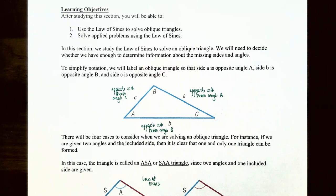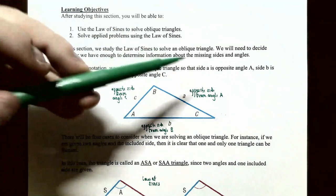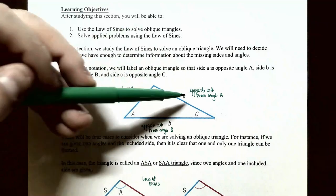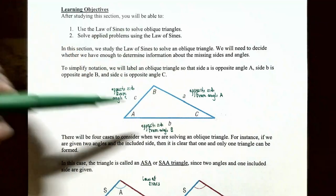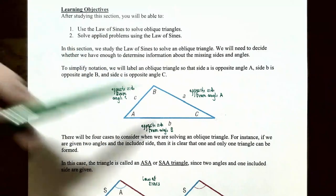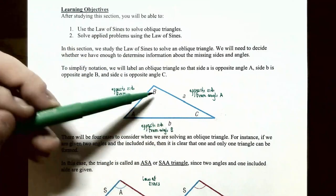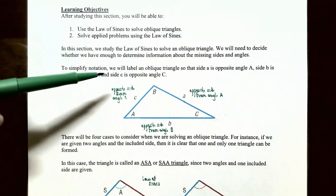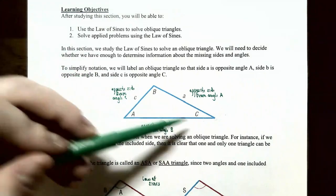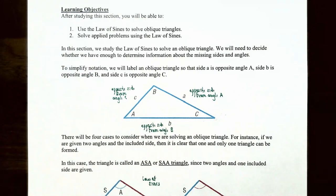To simplify the notation, we're going to label our oblique triangle so that side a is across from angle A, side b is across from angle B, and side c is across from angle C.